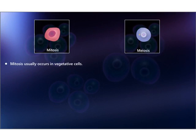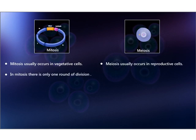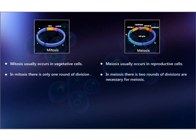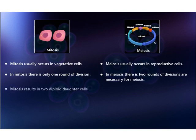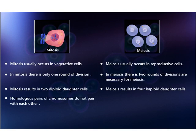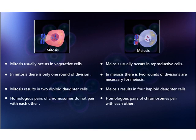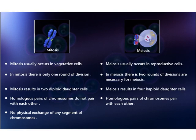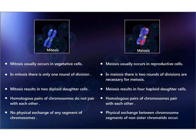Mitosis usually occurs in vegetative cells and meiosis usually occurs in reproductive cells. In mitosis there is only one round of division, but two rounds of divisions are necessary for meiosis. Mitosis results in two diploid daughter cells, but meiosis results in four haploid daughter cells. Unlike mitosis, two homologous pairs of chromosomes pair with each other in meiosis. In mitosis there is no physical exchange of chromosome segments, but in meiosis, physical exchange between chromosome segments of non-sister chromatids occurs.